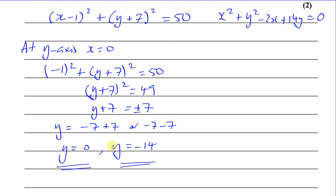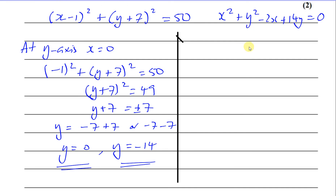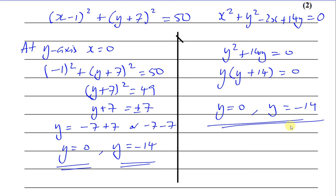The two values are y equals 0 or y equals negative 14 — one at the origin, one at negative 14. We can verify using the original equation: when x equals 0, the x-squared and the minus 2x terms vanish, leaving y squared plus 14y equals 0. Factorising: y(y plus 14) equals 0, so y equals 0 or y equals negative 14 — the same answer, and actually much quicker.